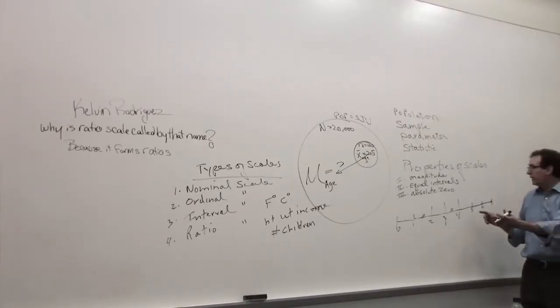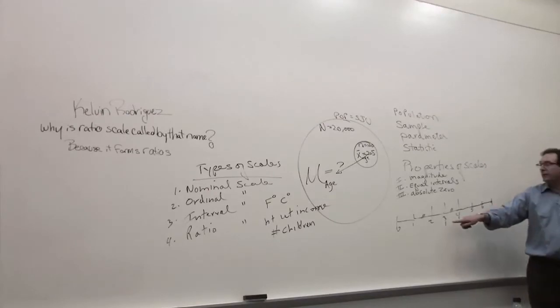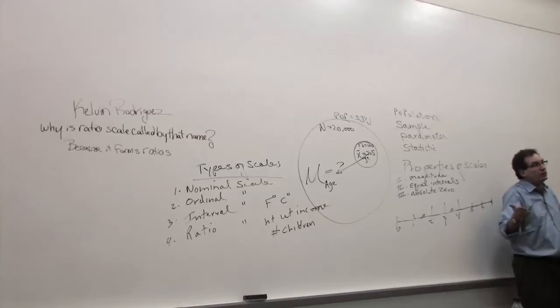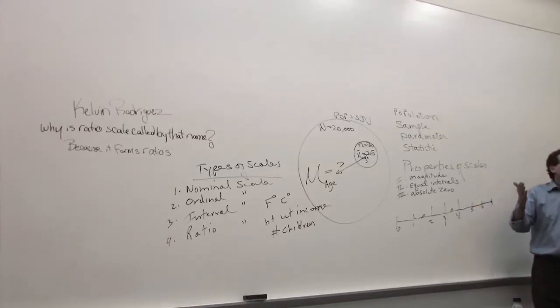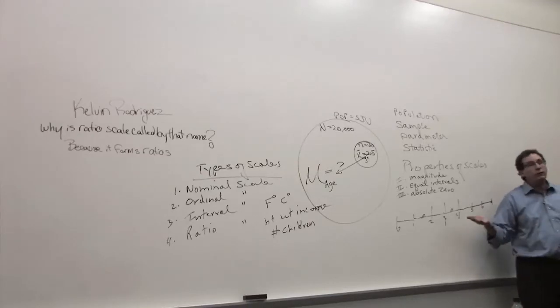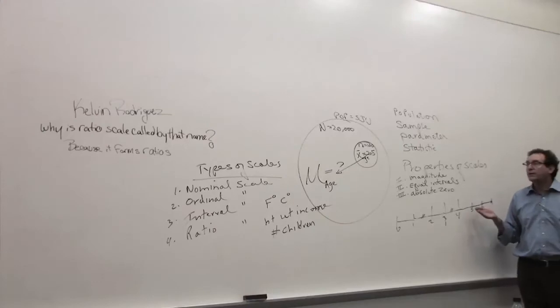But if a piece of lumber is six feet long and another piece of lumber is three feet long, can you say the six foot lumber is twice as big as the three foot lumber? That makes perfect sense. So in other words, in certain kinds of situations, you're allowed to form ratios. In other kinds of situations, you can't form the ratio.